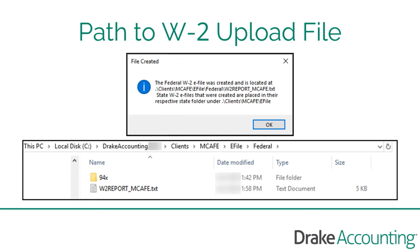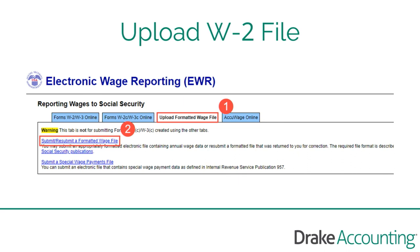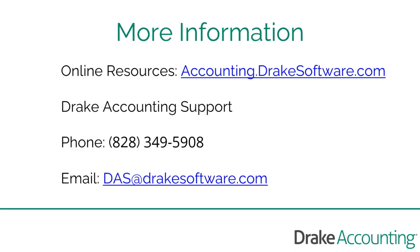AccuAge then reviews the file. Now upload the file to the SSA by going to the Upload Formatted Wage File tab and click the link for Submit Resubmit a Formatted Wage File. Just like you did when finding the file for AccuAge, follow the path to search for your file you created and submit. You have now uploaded your client's W-2s to the SSA. For more information, visit accounting.drakesoftware.com.